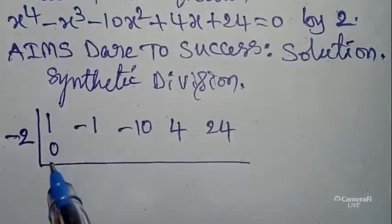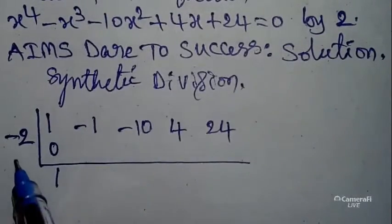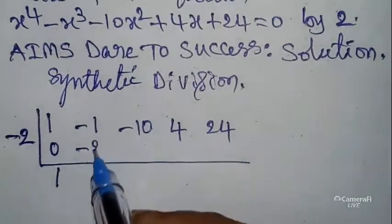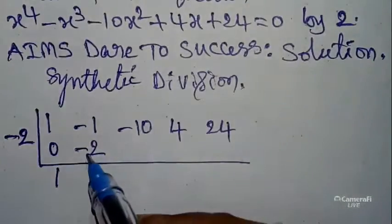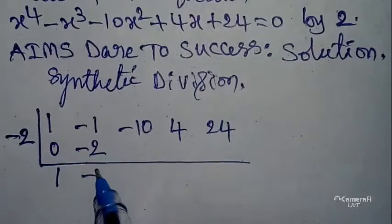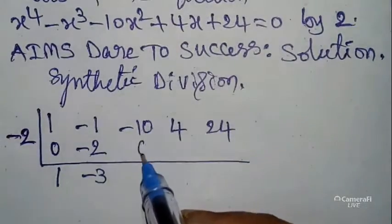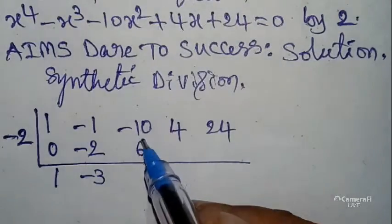First place you can write 0. Addition: 1 + 0 is 1. Next cross multiply: 1 × -2 is -2. Next addition: -1 - 2 is -3. Cross multiply: -3 × -2 is 6.